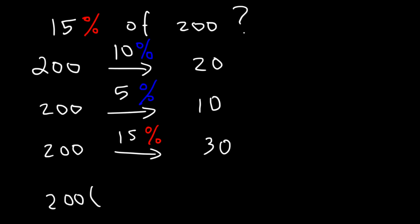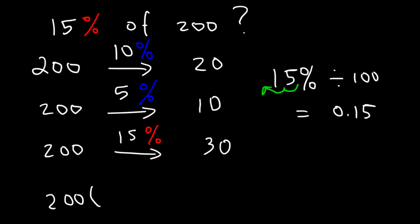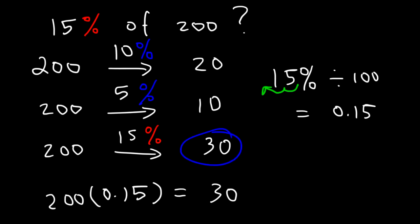To confirm the answer using a calculator, take 200 and multiply it by 15% as a decimal. To convert a percentage into a decimal, simply divide by 100 — 15 divided by 100 is 0.15 — or move the decimal point two units to the left. So 200 times 0.15 is indeed equal to 30.